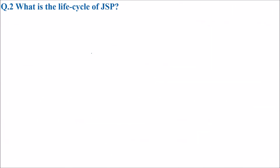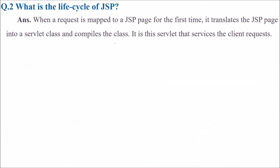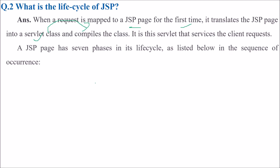What is the life cycle of JSP? When a request is mapped to a JSP page for the first time, it translates the JSP page into a servlet class and then compiles this class. It is this servlet that services or responds to the client request. A JSP page has seven phases in its lifecycle.